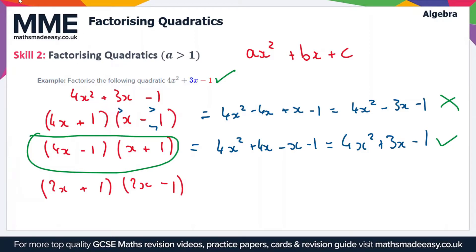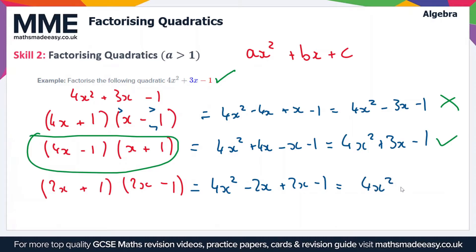Let's also check the last combination: 2x times 2x gives us 4x squared, 2x times minus 1 gives us minus 2x, plus 1 times 2x gives us plus 2x, and 1 times minus 1 gives us minus 1. The 2x and minus 2x cancel, so we get 4x squared minus 1 — that's not our right answer. So as established, the correct answer is (4x - 1)(x + 1).